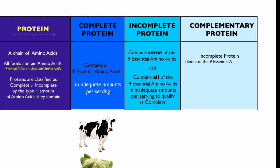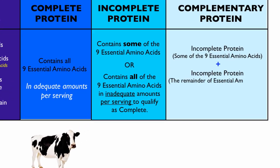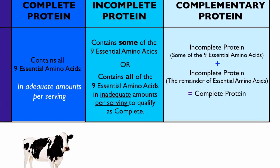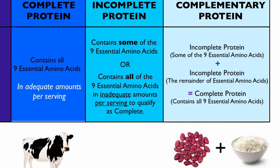Complementary proteins are incomplete proteins which contain some of the nine essential amino acids, plus another incomplete protein which contains the remainder of them, to form a complete protein containing all nine essential amino acids in adequate amounts per serving. An example of that is a combination of rice and beans — those two are considered complementary proteins that together form a complete protein.